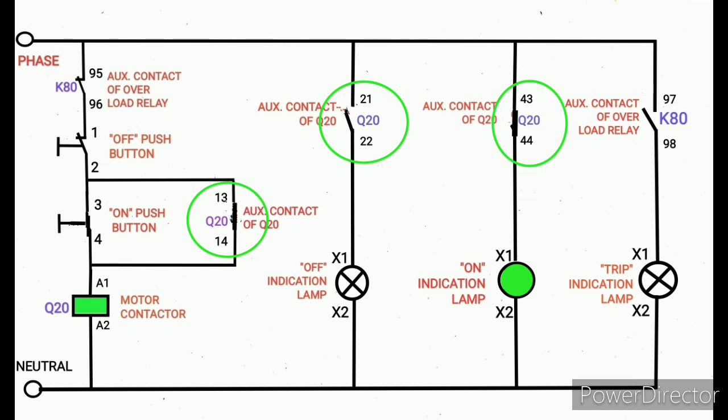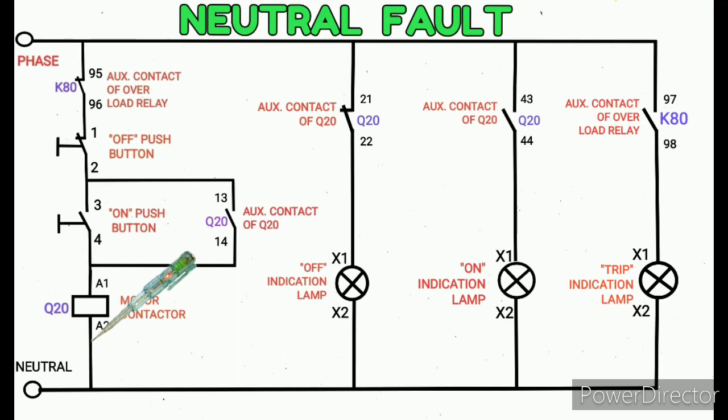Then auxiliary contact of 43-44 changed to NC. Now I completed the phase side of testing. I am going to explain the neutral side. Neutral end, you put the tester on the neutral point of any area. You need to check with the neutral.